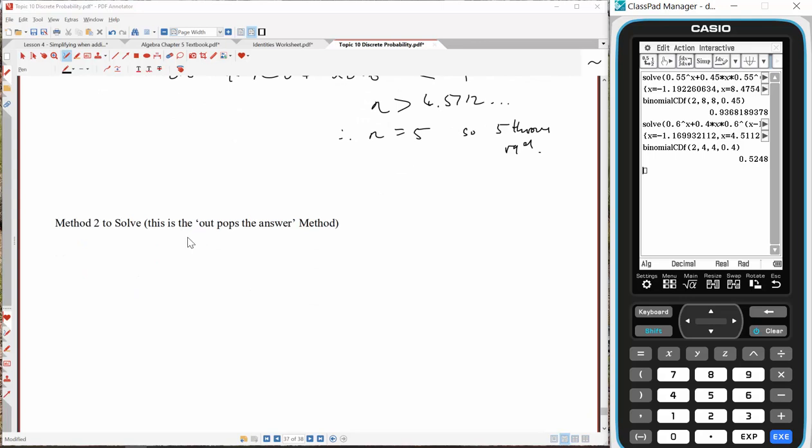Here goes method 2. This is the out pops the answer method. This will involve an inbuilt program called BPN. Now, your calculators don't have that installed, but I will have that installed for you for the exam. BPN was developed by this bloke who works for Casio called Charlie Watson. If you YouTube him, you'll see heaps of his Casio stuff around. He's really great at explaining things on the CAS calculator. So he developed BPN. I've got it on this calculator here, and I'm going to show you how to use it.